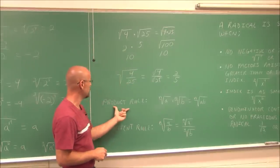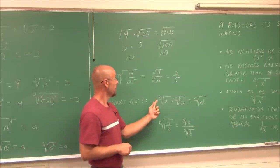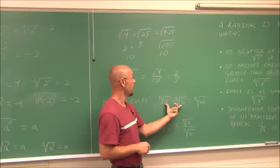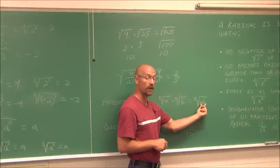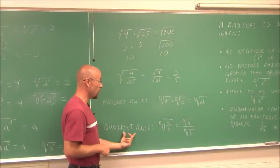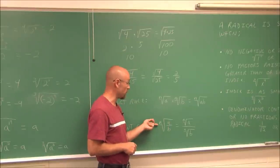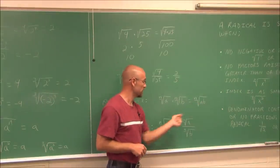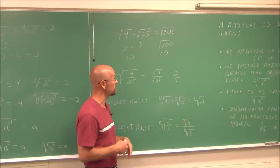So let's define these rules. The product rule states that if the indexes are the same, I can bring the radicands under one radical and take the nth root of their product. The quotient rule states that if I have a fraction under a radical, I can split it into the nth root of the numerator divided by the nth root of the denominator, simplifying each separately.